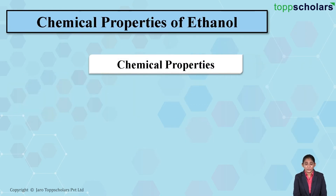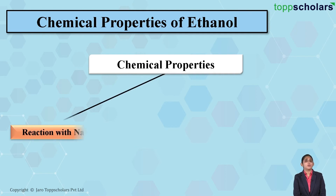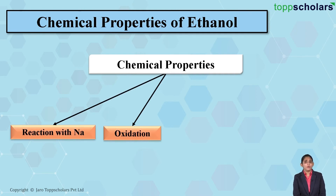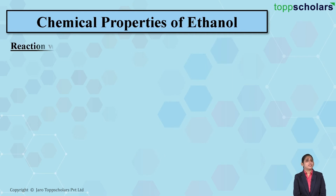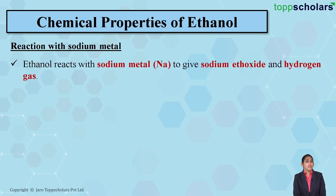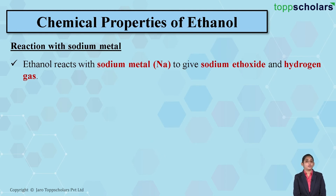Now let's discuss the chemical properties of ethanol. We will cover the reaction of ethanol with sodium, followed by oxidation reaction, combustion reaction, and dehydration reaction. Let's first start with the reaction of ethanol with sodium metal. When ethanol reacts with sodium metal, it results in the formation of sodium ethoxide along with the liberation of hydrogen gas.